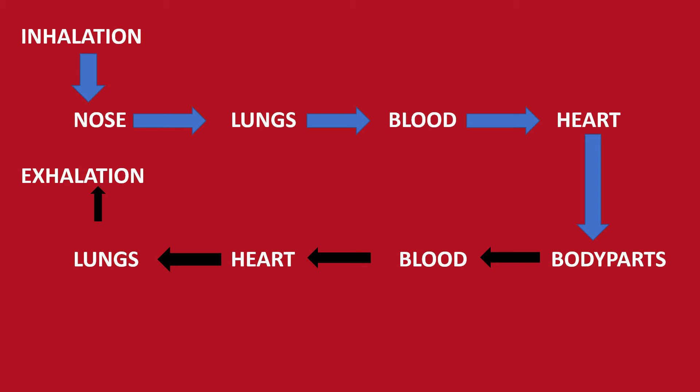Through this flow chart, we can understand the passage of oxygen and carbon dioxide in our body. We start with inhalation where oxygen passes from the nose to the lungs, to the blood, and then to the heart. The heart distributes the oxygen to the whole body. Carbon dioxide is then exhaled from the body parts, moving towards the blood, to the heart, then finally to the lungs, which exhale the carbon dioxide outside the body.